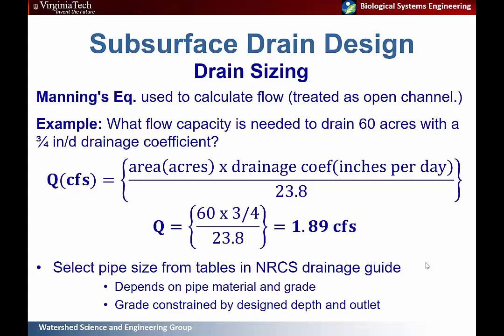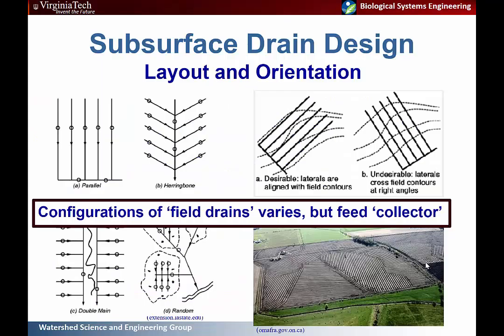Grade is more difficult to advise as it's very site-specific, but it is constrained by your design depth relative to the surface, the slope of the land, and the outlet. You need a free-falling outlet to remove that water efficiently, or you need to consider pumping. As far as layout and orientation, it's desirable for laterals feeding the main to run in the same direction as the slope. Different lateral configurations include parallel, herringbone, double main, and random layouts — all with laterals feeding a main. In practice, you often end up with more random patterns.